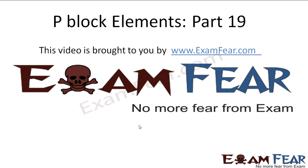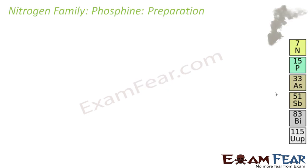Hello friends, this video on P-Block Elements part 19 is brought to you by examphia.com — No more fear from exam. Next, an important compound: Phosphine, that is PH3. Phosphine is a very important compound, present in gaseous form. It is prepared by the reaction of Calcium Phosphide with water or dilute acid — that is the industrial preparation.